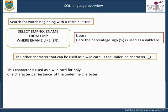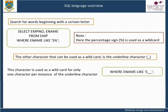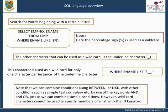That is, if we write: WHERE employee name LIKE 'S__', the query will return employees whose names start with S and have precisely two further characters after the S. So employees called Son or Sha would be returned, but employee names such as Smith or Salt would not, as they do not contain exactly three characters. Note that we can combine conditions using BETWEEN or LIKE with other conditions, such as simple tests on salary, by use of the keywords AND and OR, just as we can combine simple conditions. However, wildcard characters cannot be used to specify members of a list with the IN keyword.